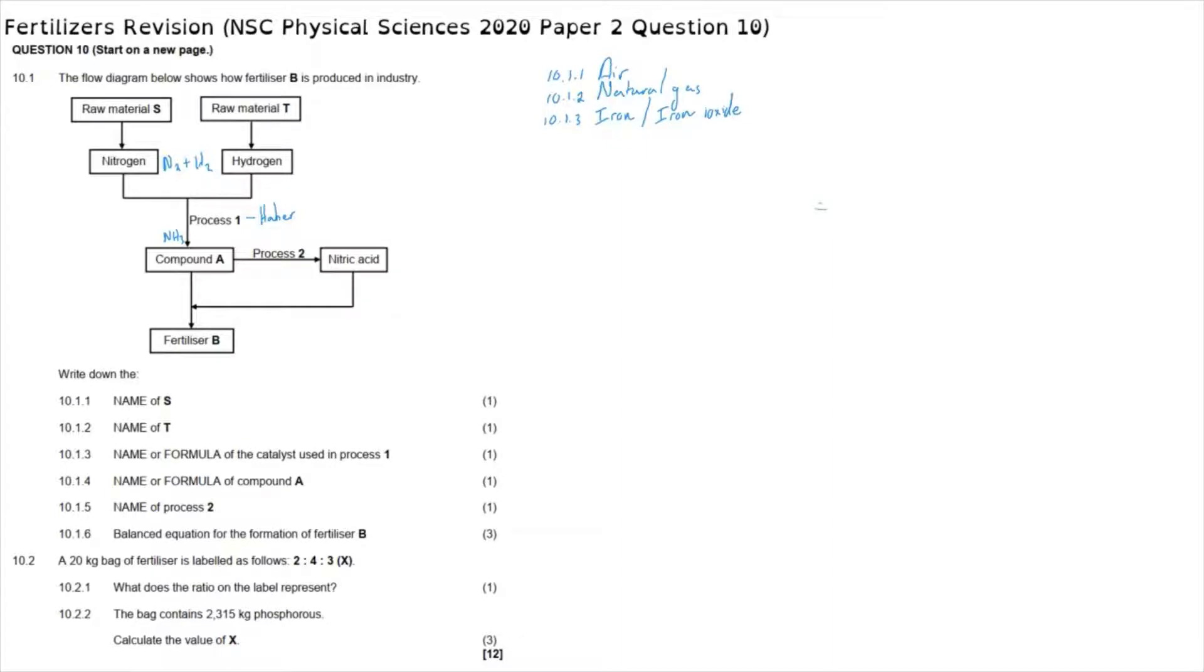Question 10.1.4: the name or formula of compound A. As we've said, we've identified this as the Haber process, which means that compound A is producing either NH3 or ammonia, name or formula.